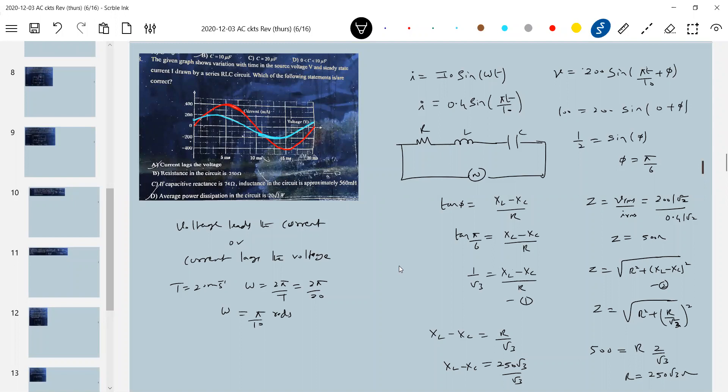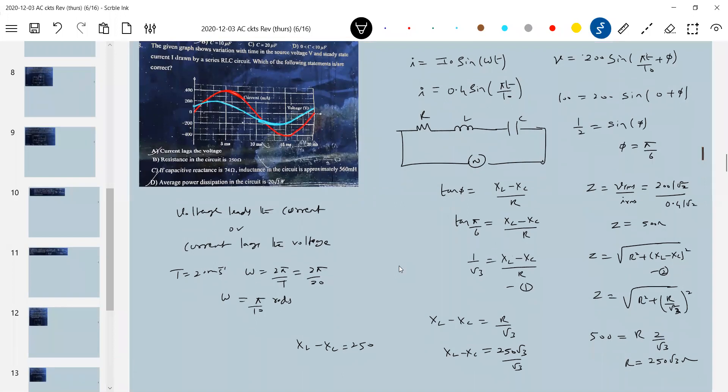Check for relationship, if XL equal to this much, L is equal to this capacity reactance, how much inductive reactance? So this is XL minus XC is equal to 250, so we can get some conditions what are given.